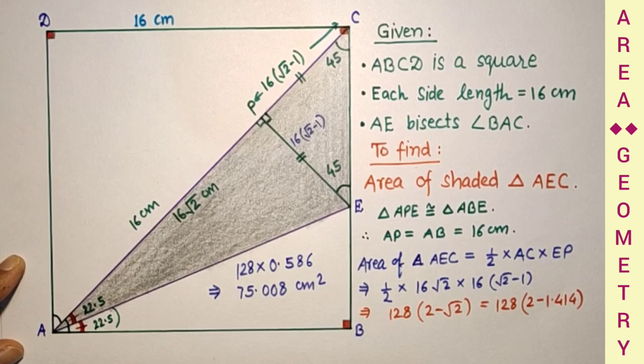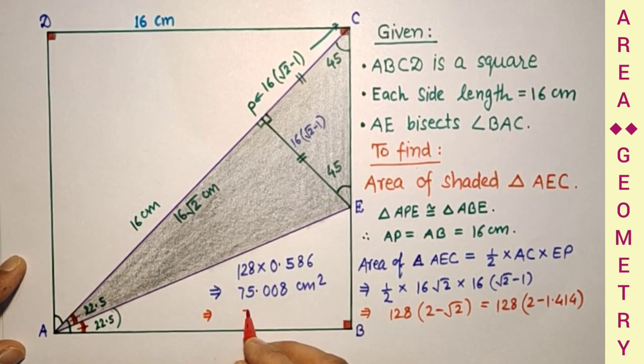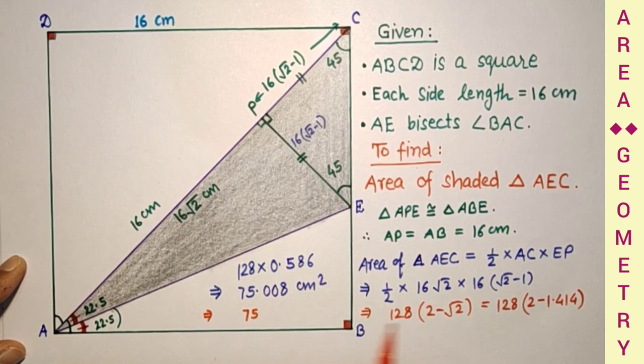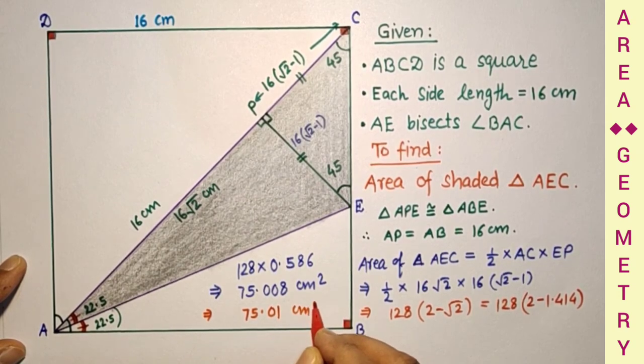So the answer is, integral answer is 75 centimetre square. And up to 2 decimal places it is 75.01 cm square. And this is the final answer.